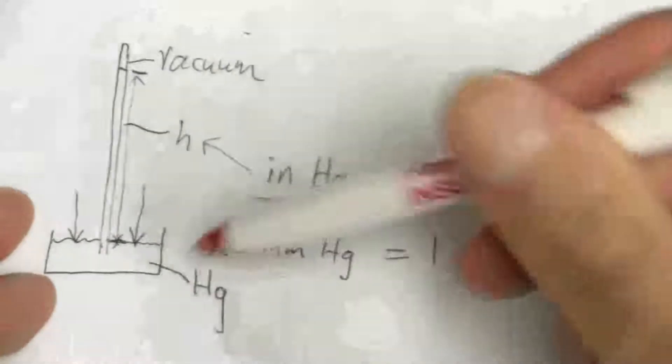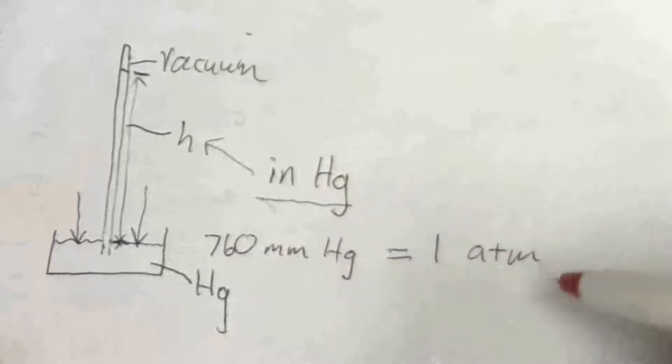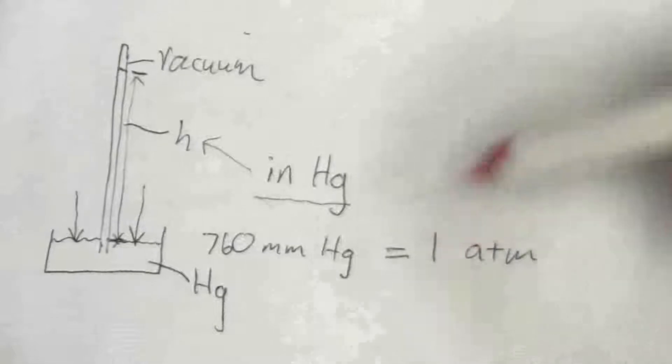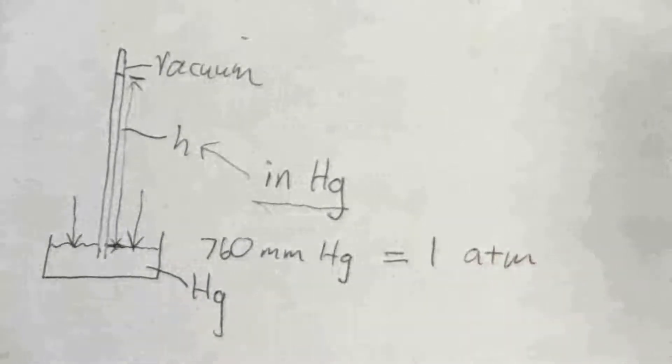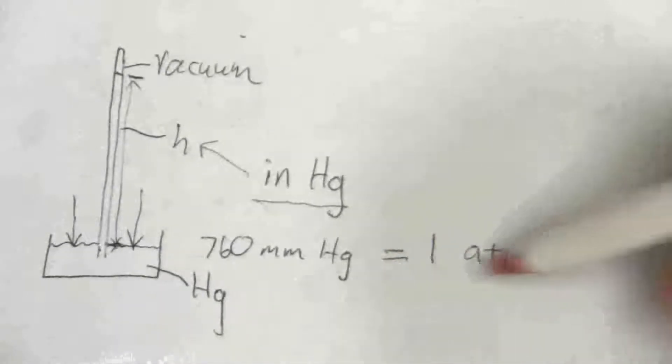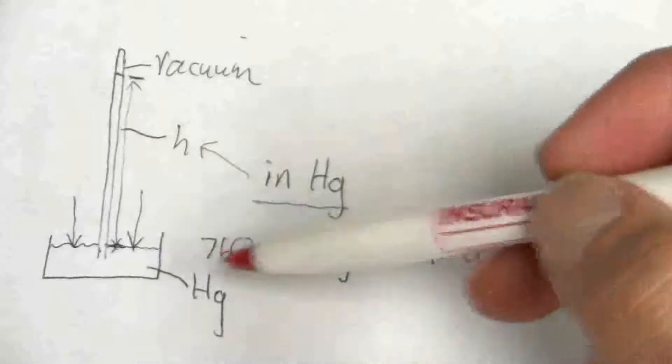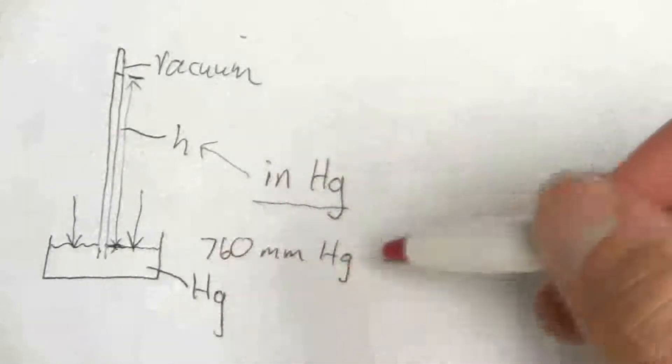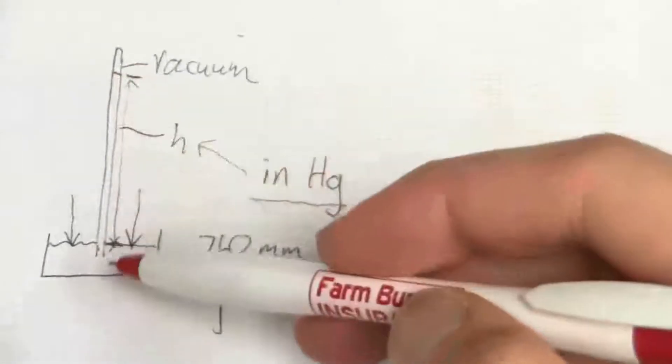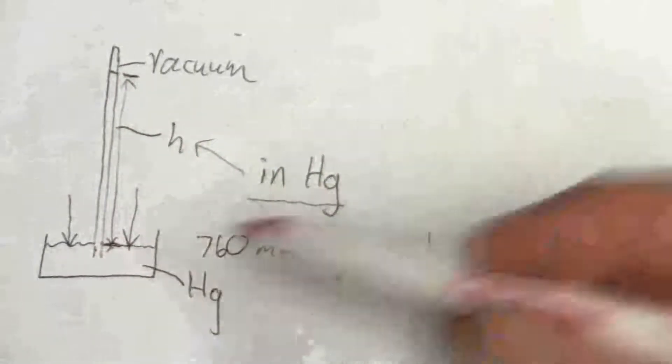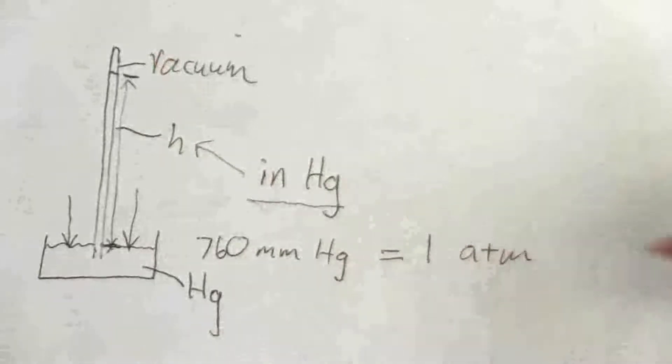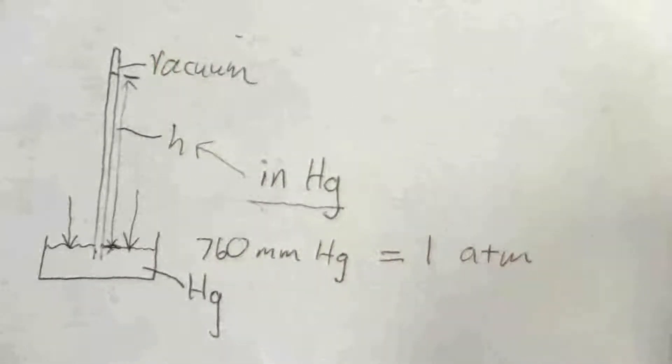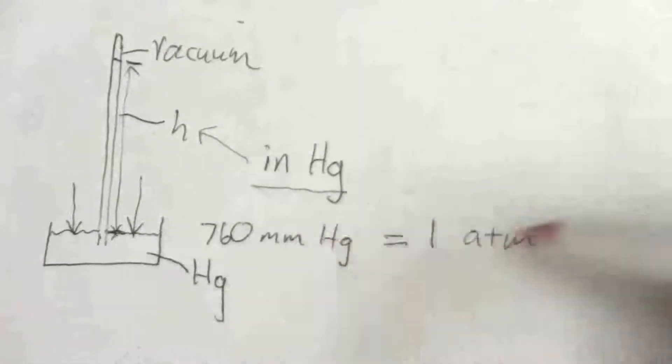There are 760 millimeters of mercury for one atmosphere. So this is a conversion factor between atmospheres, which one atmosphere is just one times the pressure exerted by the atmosphere. That's why it's called atmospheres. And there are exactly 760 millimeters of mercury, that column is exactly 760 millimeters to form one atmosphere of pressure.